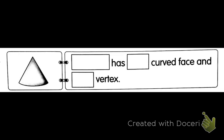This is cone. Cone has how many curve faces? Only one curve face. And how many vertices? This one here, only one vertex. One curve face, one vertex.